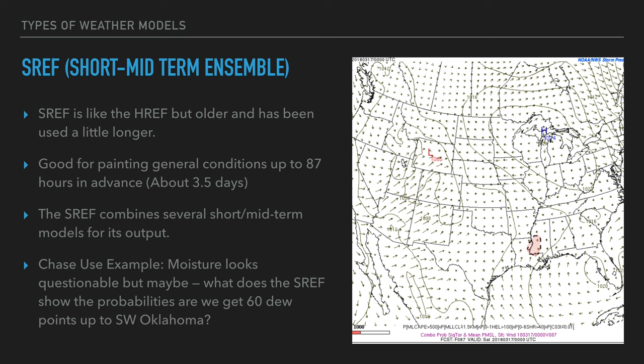A good classic use of the SREF: you're looking three days out, moisture looks questionable on the GFS and the NAM — what does the SREF say? Are we going to get 62-degree dewpoints in southwest Oklahoma? If you're getting 75–80% probability, you can count on it. If it's closer to 40–50%, it's more questionable. The SREF is really good for seeing model disagreements in the medium-term period, and it's surprisingly useful more often than you'd think.